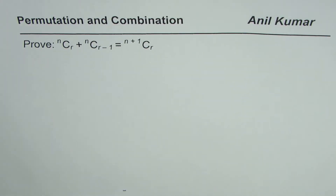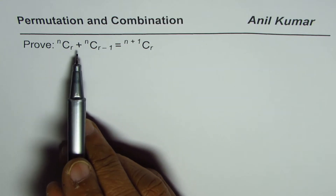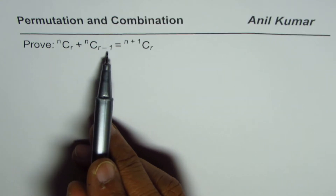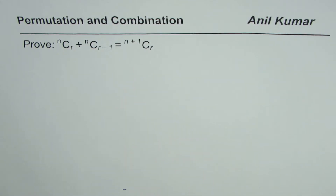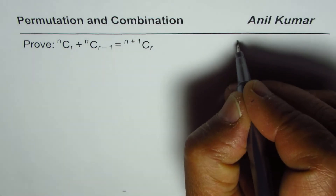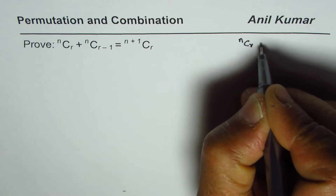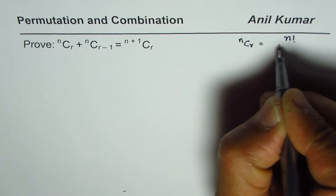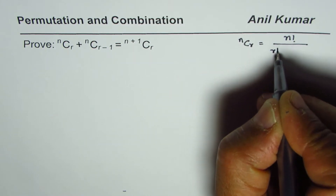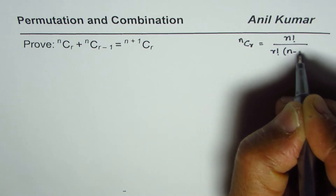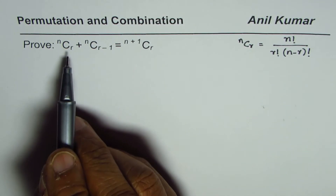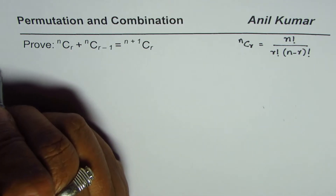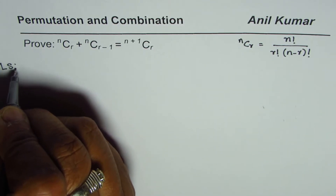I am Anil Kumar and in this video we will prove the identity nCr plus nCr minus 1 equals to n plus 1Cr. So we know what nCr is. nCr is n factorial divided by r factorial times n minus r factorial. Using this formula we will expand the left side.